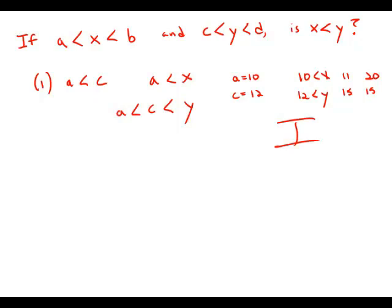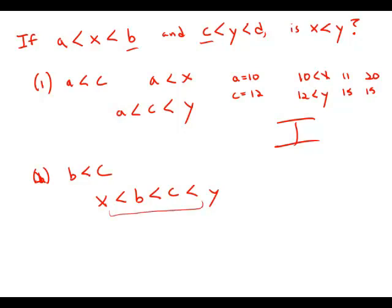Now forget about statement number one. Statement number two tells us that B is less than C. This is interesting, because this is comparing an upper limit of one of the inequalities to the lower limit of another inequality. We know that X is less than B, which is less than C, which is less than Y. And so by transitivity of inequalities, we can put those directly together and say that X is less than Y. So it turns out that this information is sufficient to answer the question.